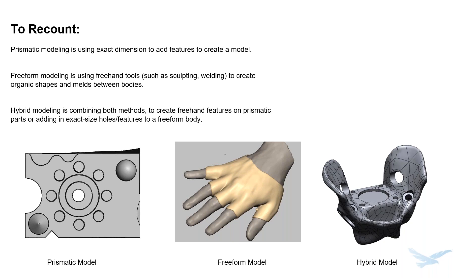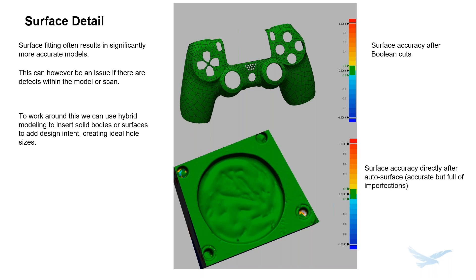Not only can we do this with solid bodies, but we can also do this with surfaces. Surface detail is another whole aspect of reverse engineering — sometimes we need to extract a specific base to replace a different one. In the case of something like a PlayStation 4 controller, we can create the surface, then thicken it, and now we have something we can 3D print. Surface fitting is often significantly more accurate than other forms of hand modeling, because you're fitting these surfaces to the mesh itself. As we can see from the deviation analysis report, the controller's shell is extremely accurate — it's all green compared to the histogram.